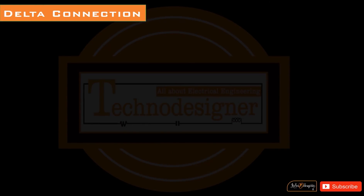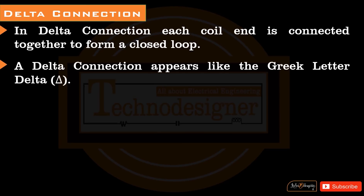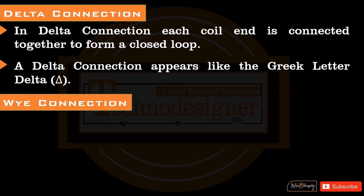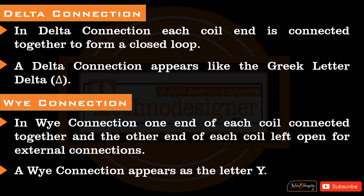Delta connection: In delta connection, each coil end is connected together to form a closed loop. A delta connection appears like the Greek letter delta. In Y connection, one end of each coil is connected together and the other end of each coil is left open for external connections. A Y connection appears as the letter Y.